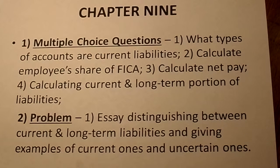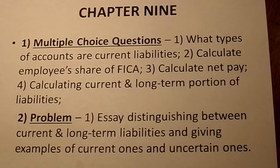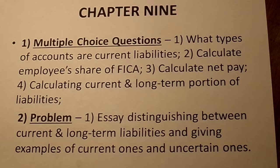Remember FICA is both Social Security and Medicare. The Social Security percent is 6.2% and the Medicare percent is 1.45%. Calculate the employee's share of FICA and calculate net pay, which means you'd have to calculate FICA. Also keep in mind that unemployment taxes do not affect net pay because employers pay those, not employees.